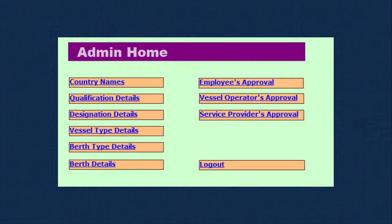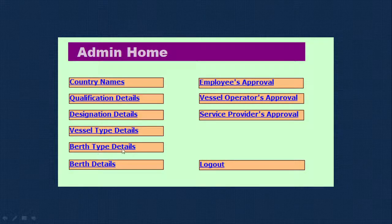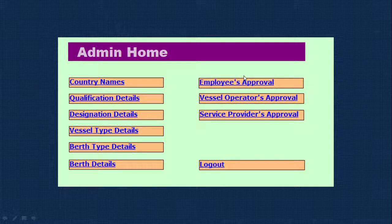In the admin module, we can enter country names, because ships come from different countries. Then qualifications and designations for employees, vessel type, berth type, and berth details — what berths are available in this particular port. There is also employee approval, vessel operator approval, and service provider approval. When employees, vessel operators, or service providers sign up, the admin checks their credentials and approves them, after which they can log in and start working.